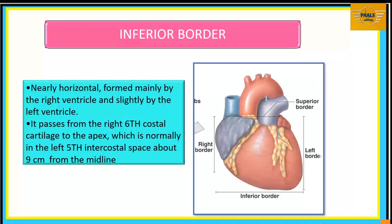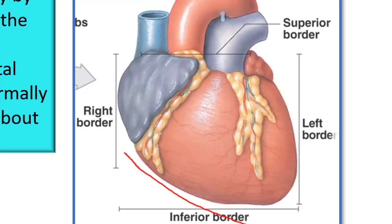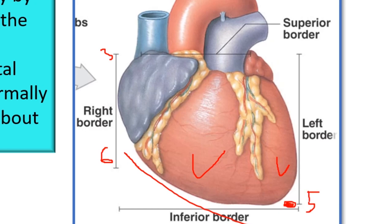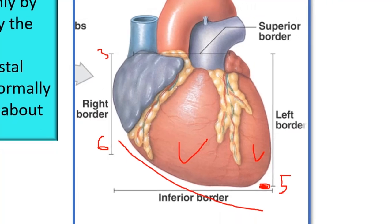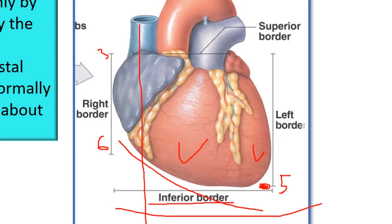The inferior border is nearly horizontal and is formed mainly by the right ventricle, with a little contribution from the left ventricle. It runs from the sixth costal cartilage to the fifth intercostal space — which is the point of the apex of the heart — and is about 9 cm from the midline.